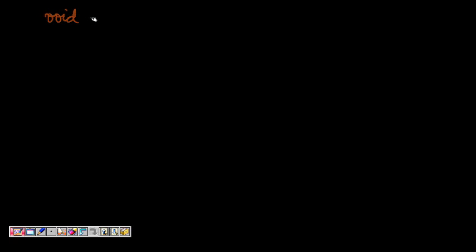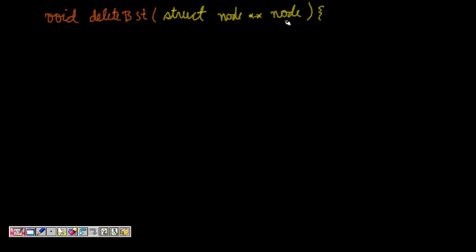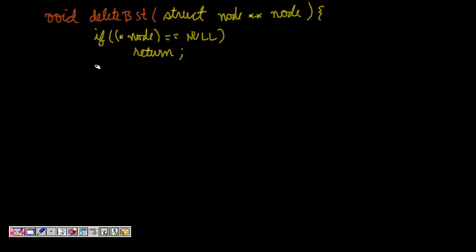We'll write the function: void deleteBST. Since we are deleting — we are changing the pointer itself — we have to pass a pointer to a pointer: struct node**. Then we check: if *node is equal to null, just return. It's a kind of post-order approach.